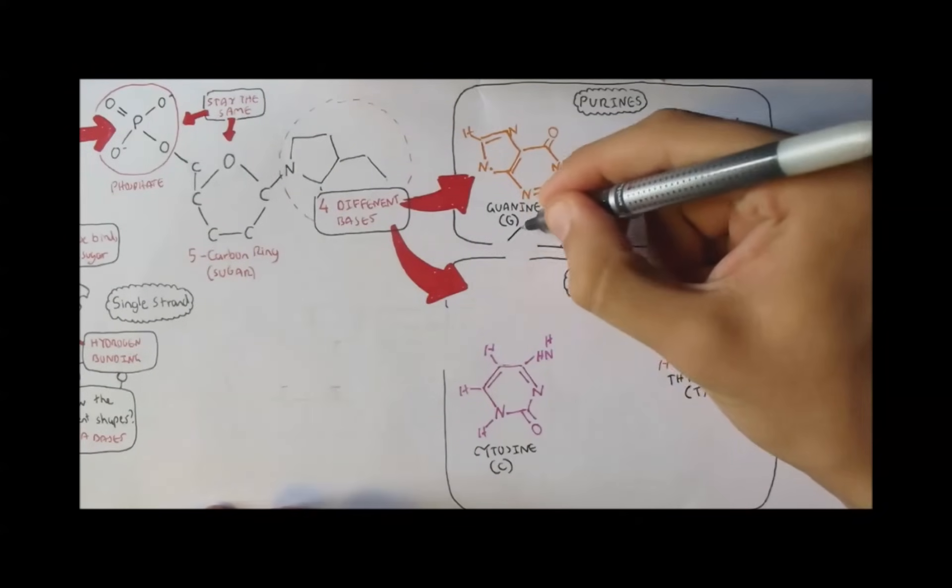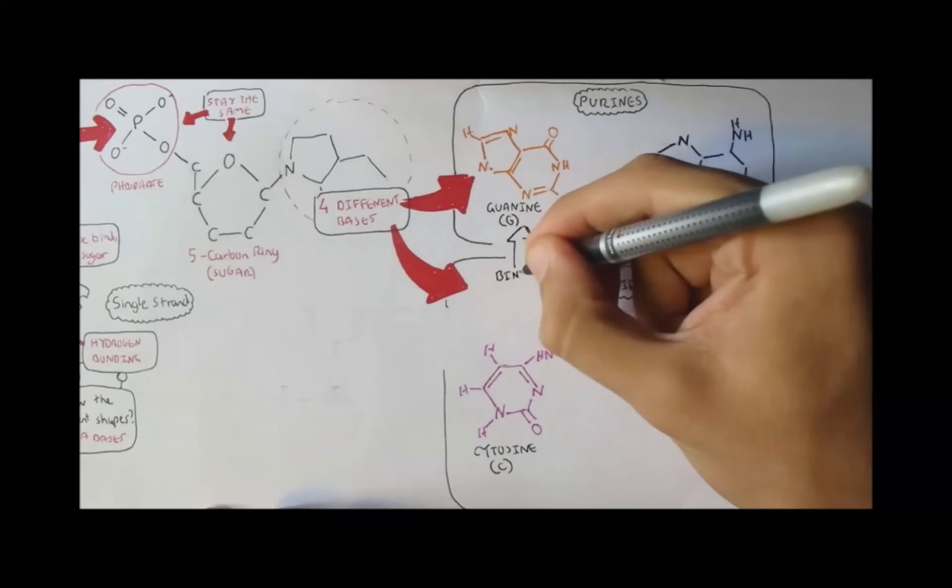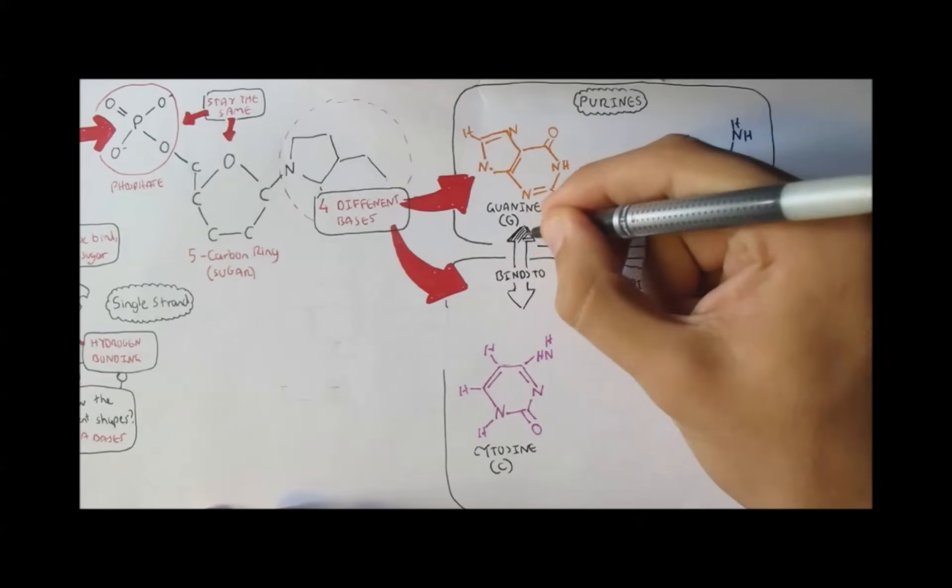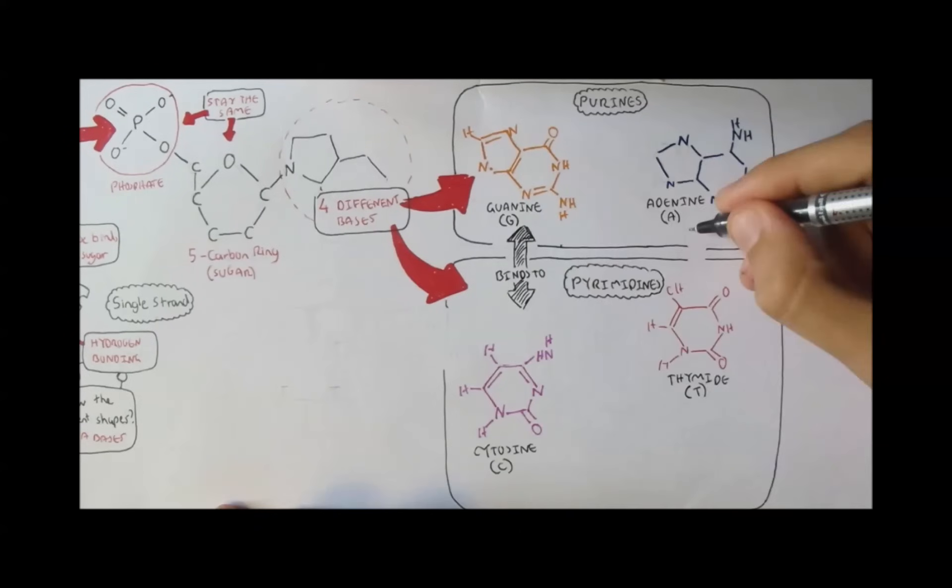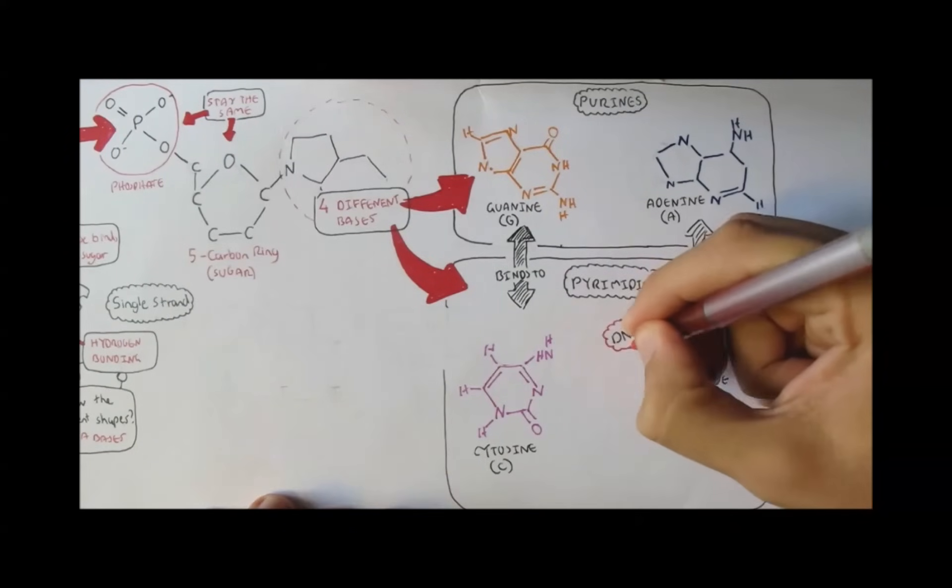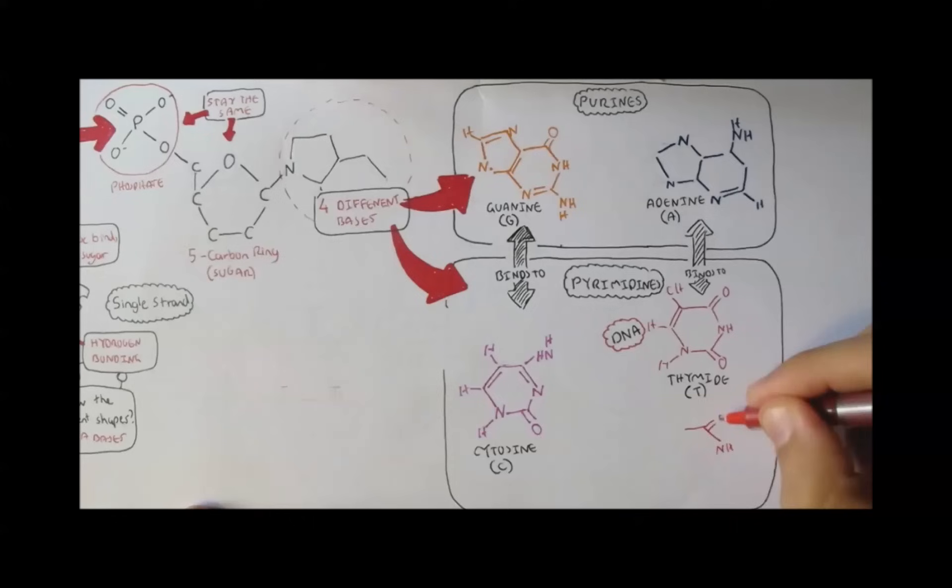Now remember how I mentioned there are two pairs of bases? The ones which connect with each other in the DNA structure? Well it turns out that guanine can bind to cytosine, and adenine can bind to thymine. Now these are the four bases only on the DNA structure.